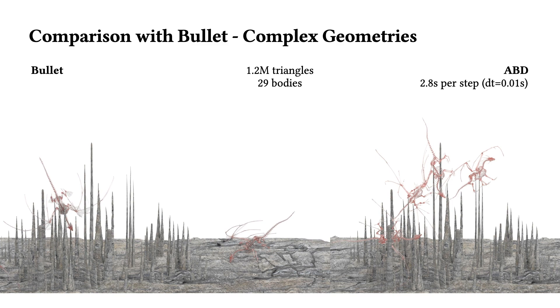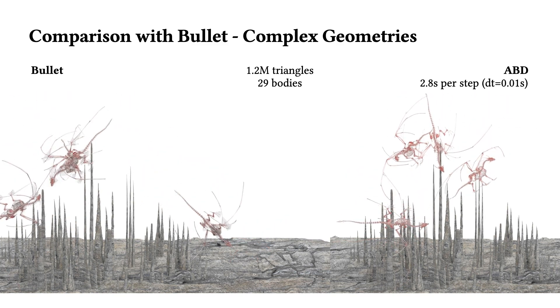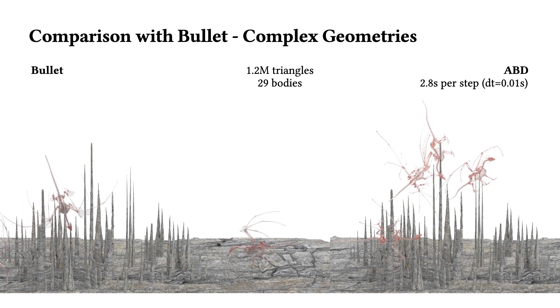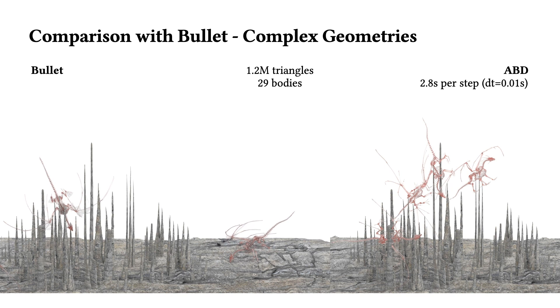Here, with the Bullet proxies, the detailed geometry of the intricate dragon skeleton is incorrectly bouncing off the sharp needle tips. On the right, ABD directly simulates on the input triangle meshes, resulting in accurately modeling detailed loops in the skeleton being caught on the tips.